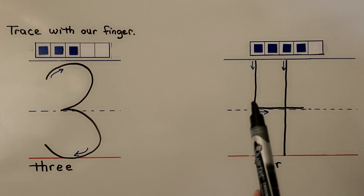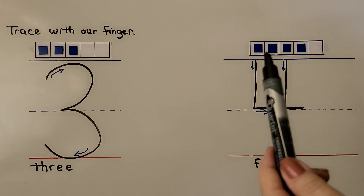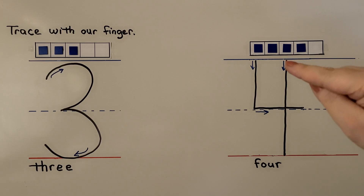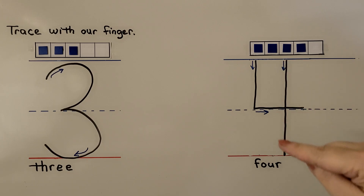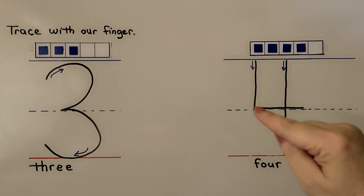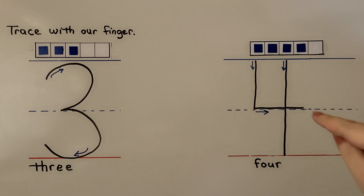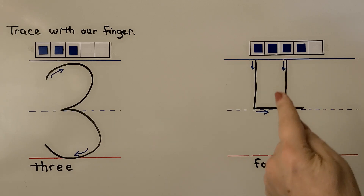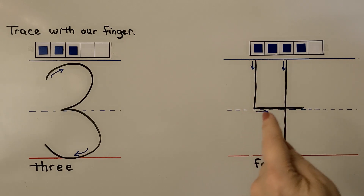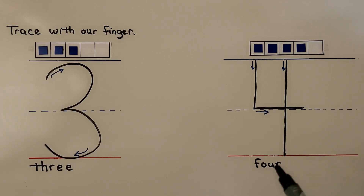Here we have the number 4: 1, 2, 3, 4. With our right hand, we can trace it — we start here, come straight down to the line, then come over on this side, come down to the dotted line, and go across. With our left hand, we start here and come straight down, then come over, down to the dotted line, and go across. Here's the word 4.